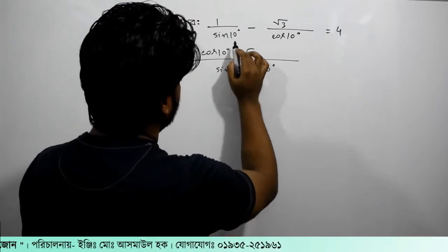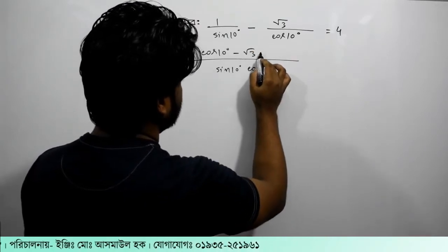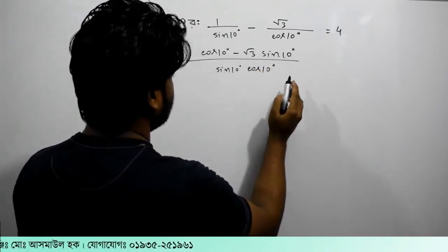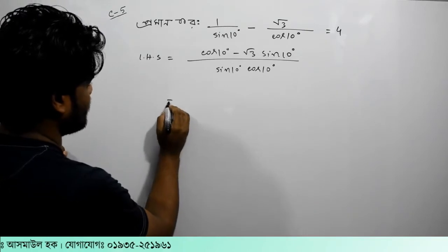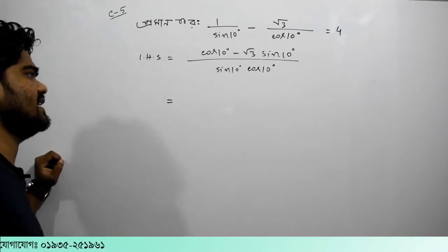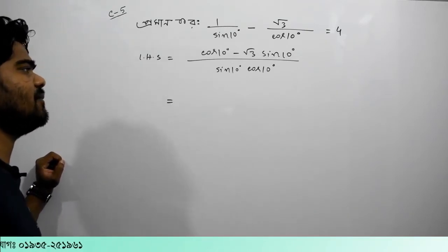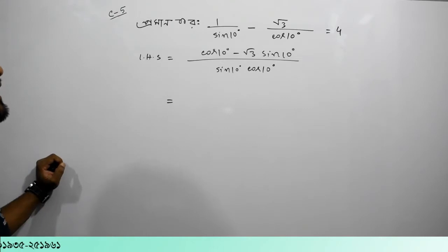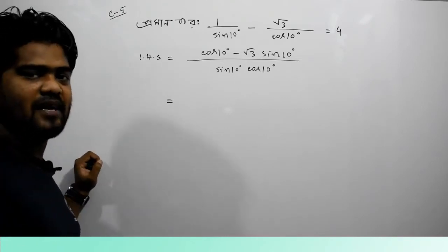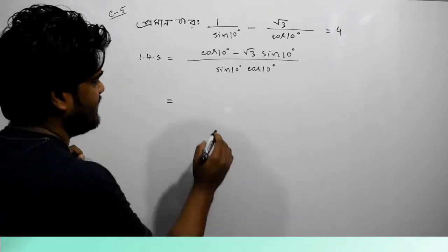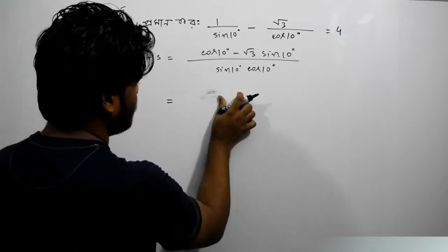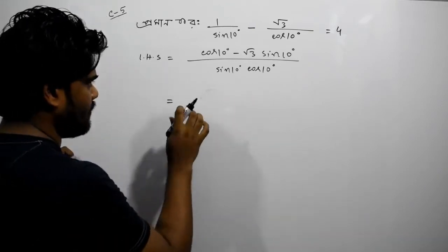We are going to do cos 10 degree minus root over 3. Cos 10 degree times the left side of the right side is written, or sin 100 degree.